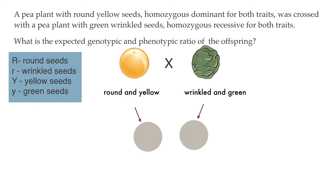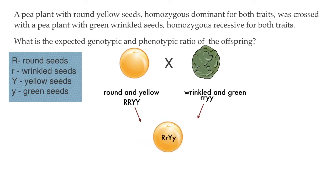Let's look at a concrete example of the law of independent assortment. Imagine that we cross two pure-breeding pea plants: one with yellow round seeds, homozygous dominant for both traits, and one with green wrinkled seeds, homozygous recessive for both traits. Because each parent is homozygous for both traits, the law of segregation tells us that the gametes made by the round yellow plant are all R Y, and the gametes made by the wrinkled green plant are all r y, because there is no other possible combination. That gives us offspring heterozygous for both traits, and because yellow and round are both dominant, all the plants would produce yellow and round seeds.